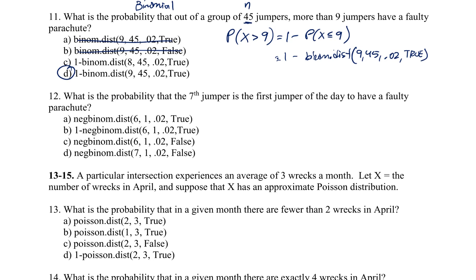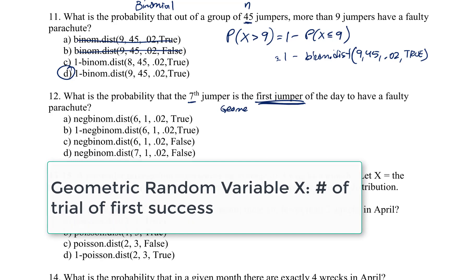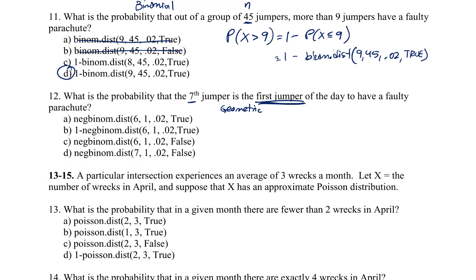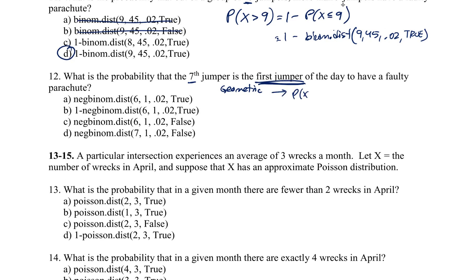Question 12: what's the probability the 7th jumper is the first to have a faulty chute? This time there's no fixed number of trials — we're looking for the trial of the first success, which is a geometric distribution. In Excel, for geometric we use NEGBINOM.DIST with K-1 failures, 1 success, and probability 0.02. For the 7th jumper being first: 6 failures, 1 success, probability 0.02, 'false.' Answer is C.